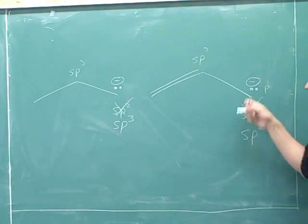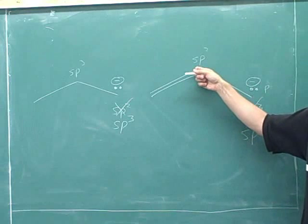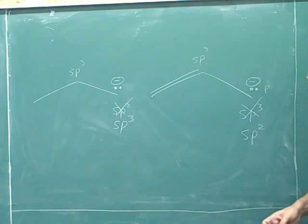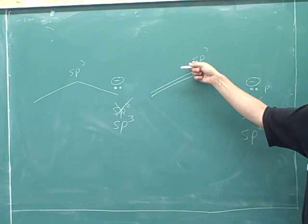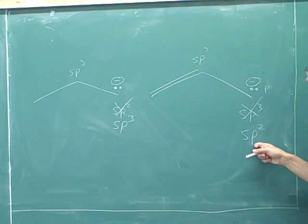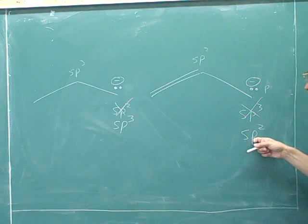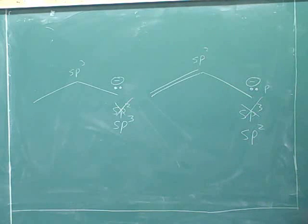But this carbon is adjacent to an sp2 hybridized atom. So it does have a p orbital over here that it can overlap with if it only becomes sp2 itself. And that explains why this is going to take the sp2 hybridization.